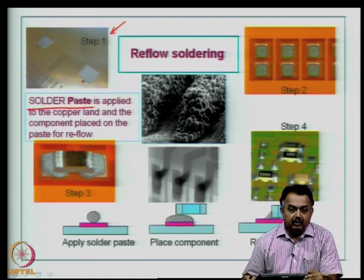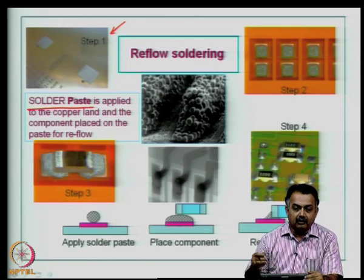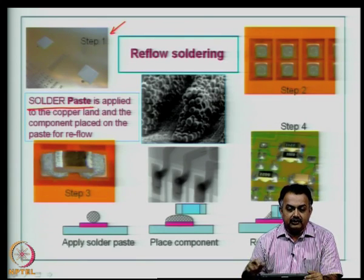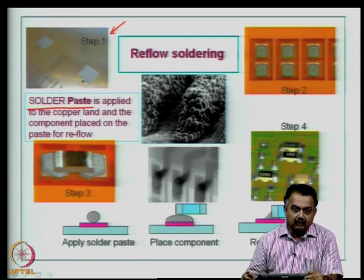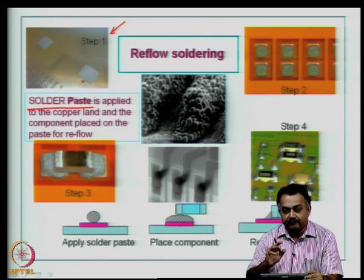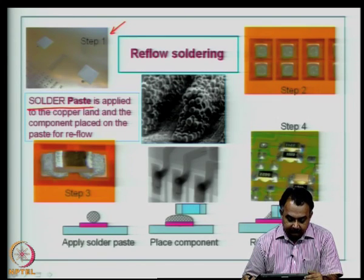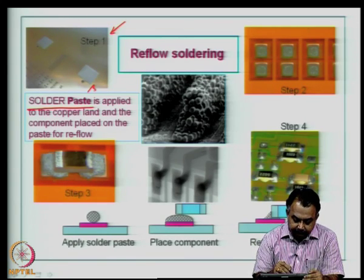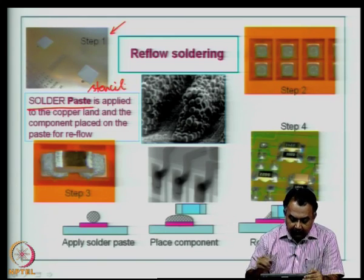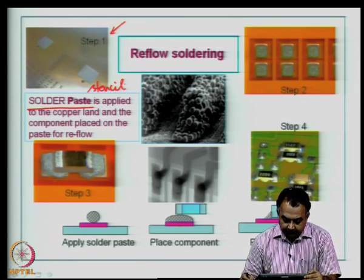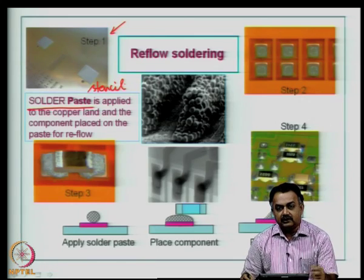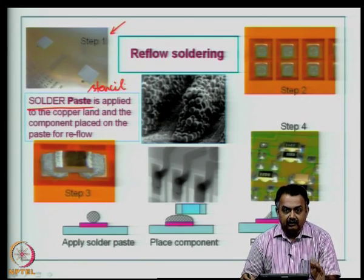Solder paste is a very important material for the reflow soldering process, compared to wave soldering where you depend on attachment of through-hole components through a large wave that wicks solder through the component lead into the via. The solder paste is applied to the copper land; this is the stencil and the footprint is available on it. The solder paste is squeezed through during the stencil printing process through perforations representing the copper lands.